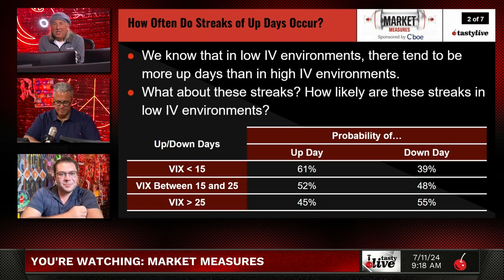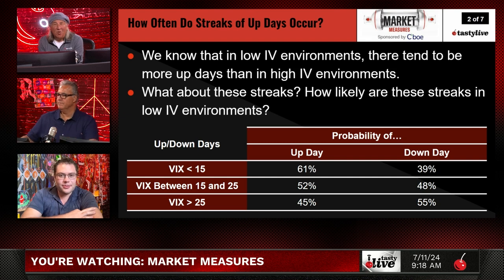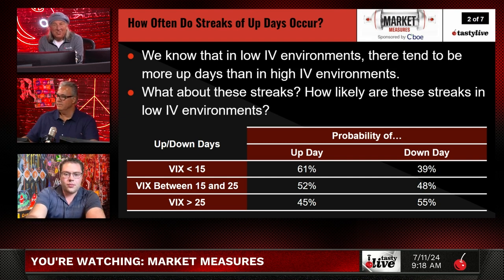We know that in low IV environments, there tend to be more up days than in high IV environments. What about these streaks? How likely are these streaks in low IV environments? Because we're in a low IV environment right now. Mr. Anton, do you want to go through these stats with us and give us a little color?